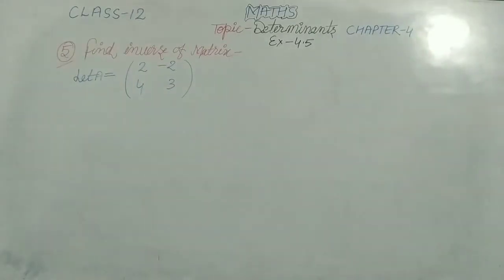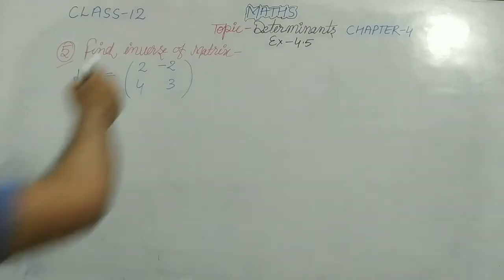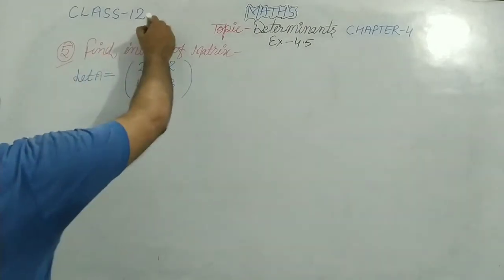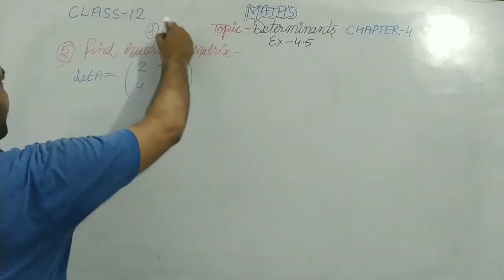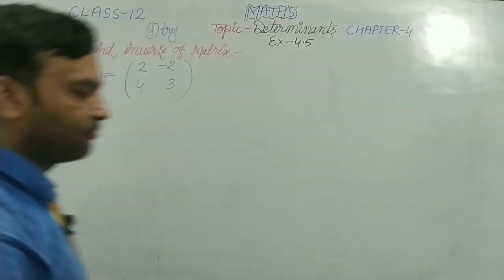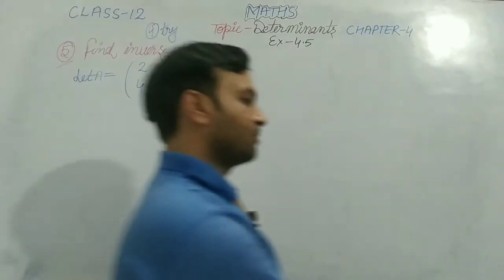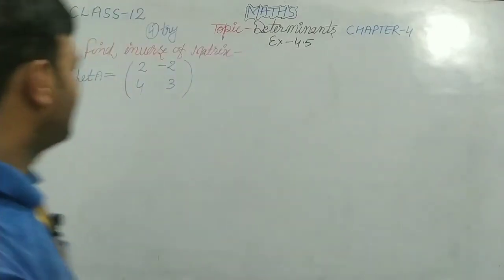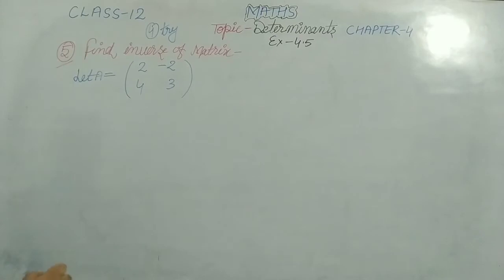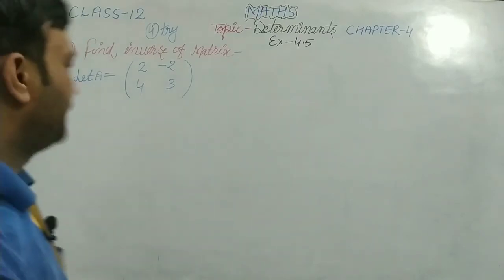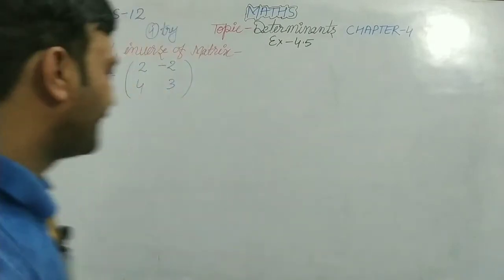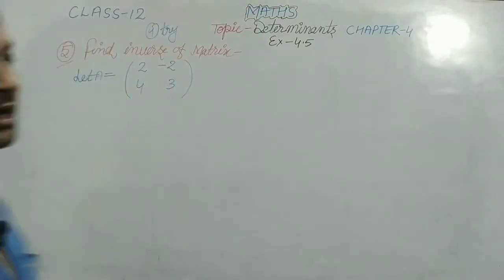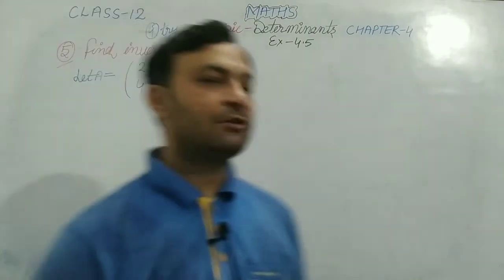Question number 4 is the same as question number 3, so you can try question number 4. If you have problems, write in the comment box. Now let's see question number 5. Here in question number 5 we have a 2 by 2 matrix and we need to find out the inverse of this matrix.